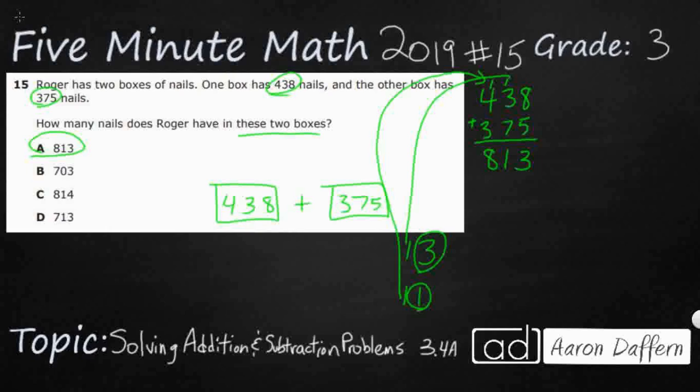Now if we're not sure about that, how can we double check our work? Well, you can take this problem and you can flip it upside down. You can use the opposite or the inverse operation. So let's take our sum, 813. We are going to subtract 375. So you see how I flip my problem upside down. I should get my 438.